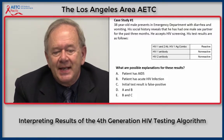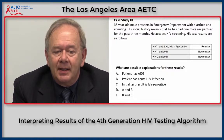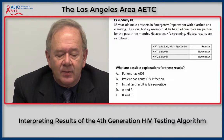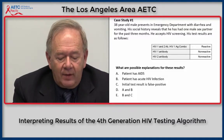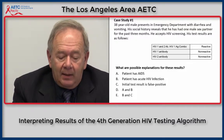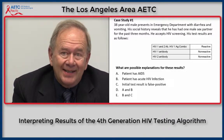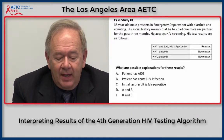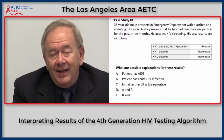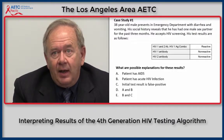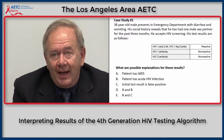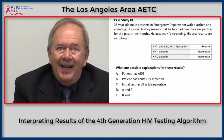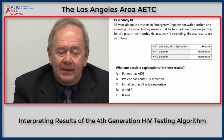The correct answer is E — both B and C. Either the patient has acute HIV infection, or the initial test result is false positive. The fourth-generation test detects infection before the antibody tests detect infection, so an individual can have either IgM antibodies or HIV P-24 antigen present as a result of acute HIV infection and still have a negative follow-up antibody test.